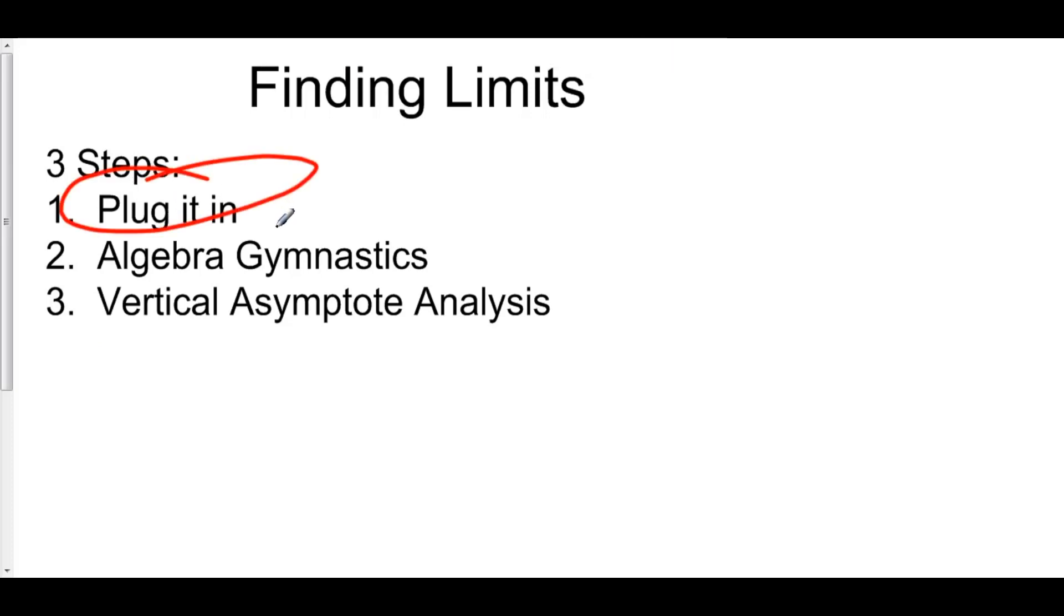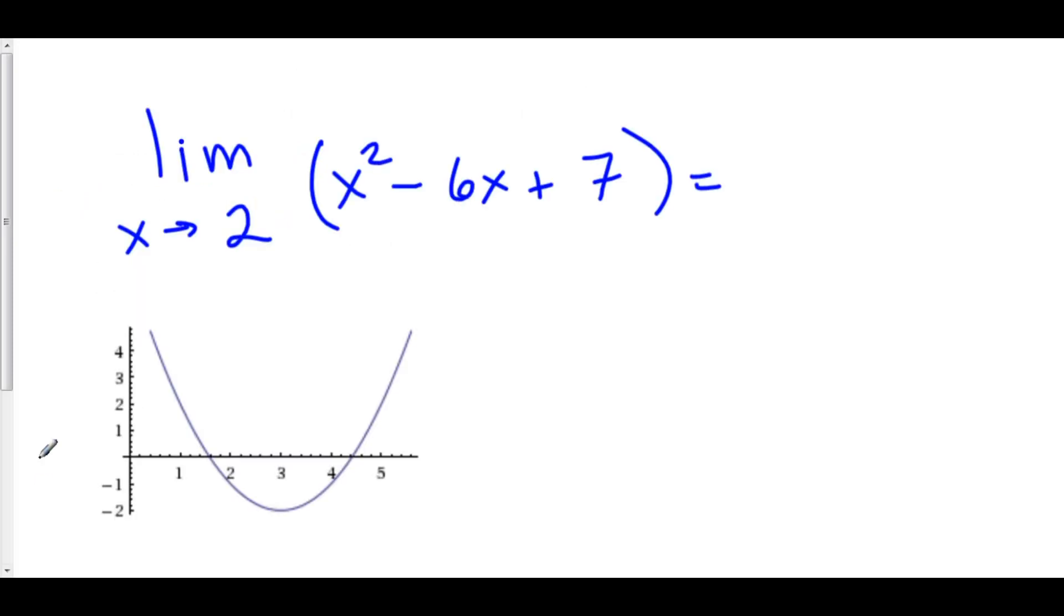And we'll talk about why this works. So here we go. Let's consider a function x squared minus 6x plus 7. And let's take the limit as x approaches 2.